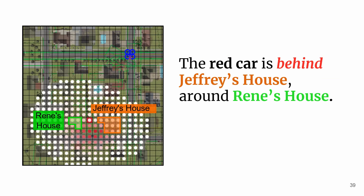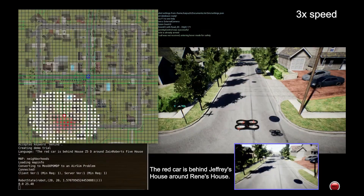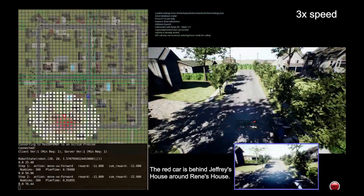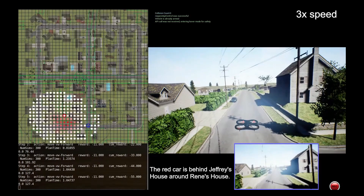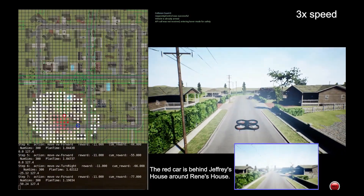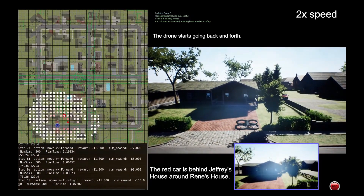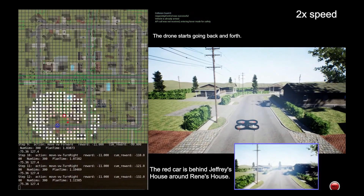We demonstrate our approach on AirSim, a realistic drone simulator in a neighborhood environment. The given spatial language description is: 'the red car is behind Jeffers' house around Rene's house.' The robot is able to infer a distribution of the target location and then search back and forth to find it.